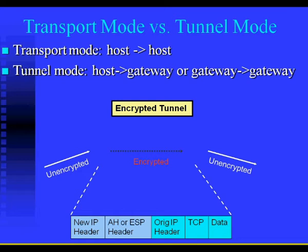Transport mode provides protection for upper layer protocol payloads by inserting the Authentication Header after the original IP header and before the IP payload. Transport mode is used for end-to-end communication between two hosts. Tunnel mode provides protection to the entire IP packet after authentication or ESP fields are added.